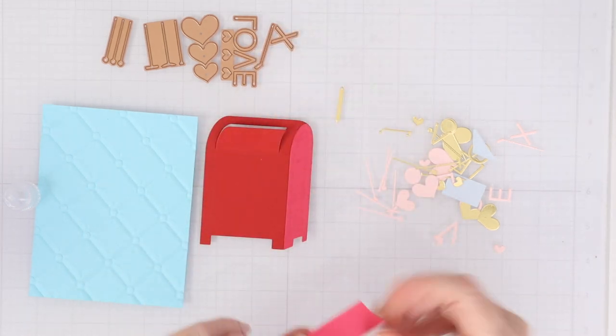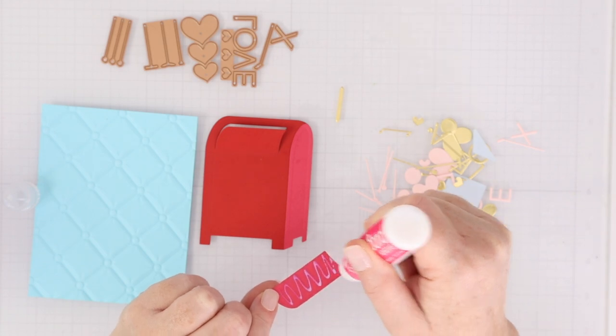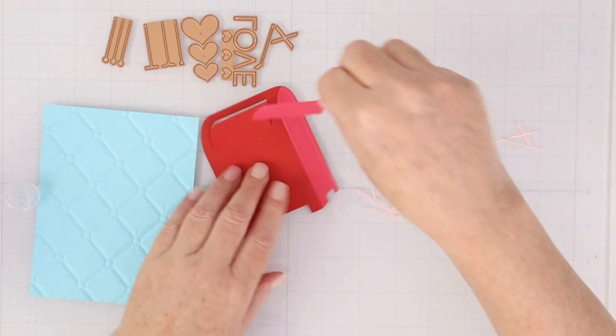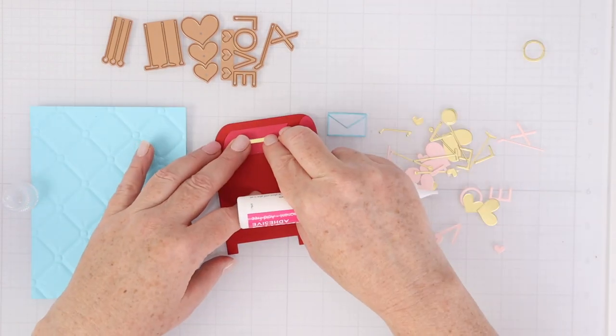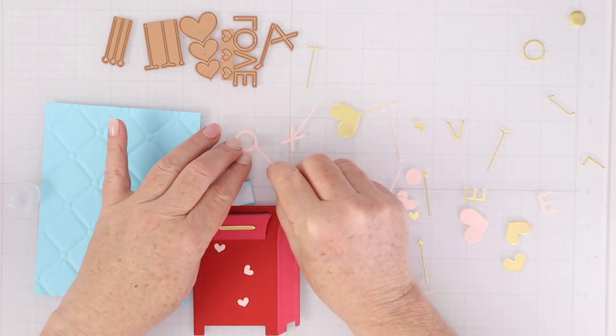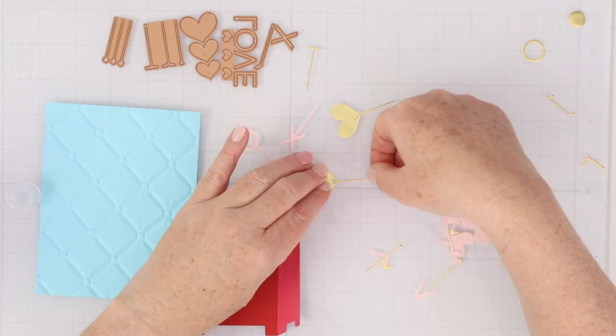So today I want to do just a little love note mailbox. So I've cut the mailbox and the side and the sort of handle, not the handle, but the part that opens on the mailbox out of two different colors of red so that you could see the difference between the side and the base.